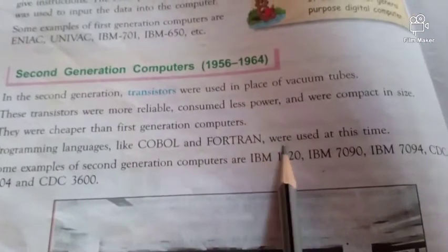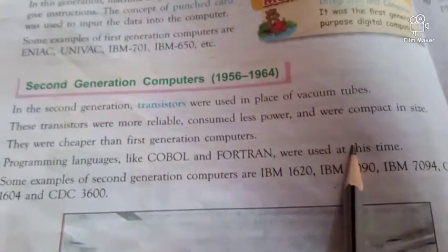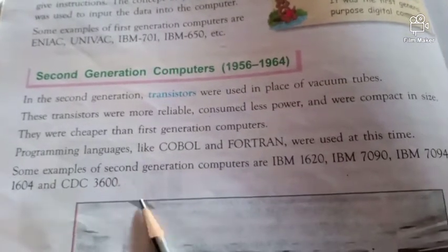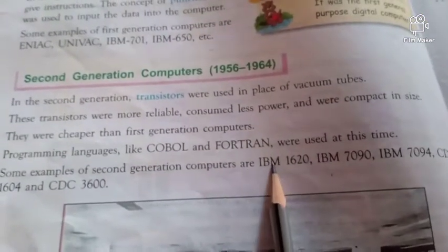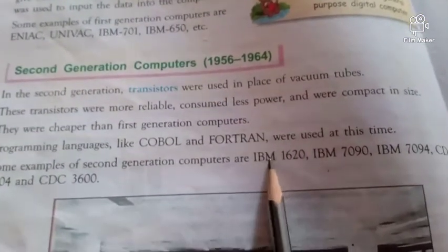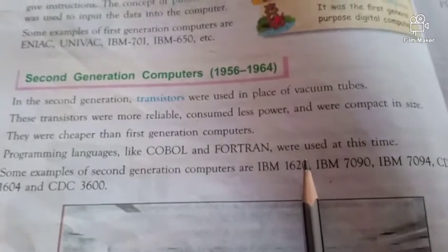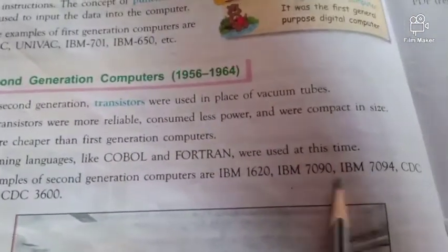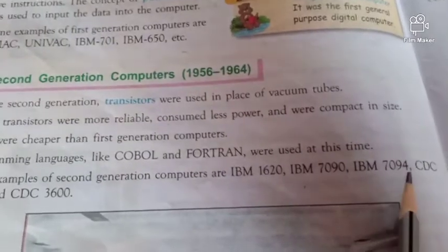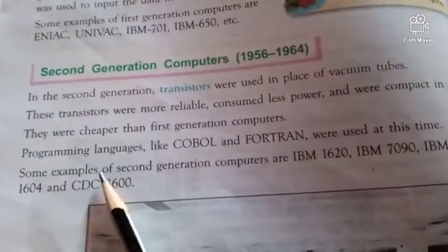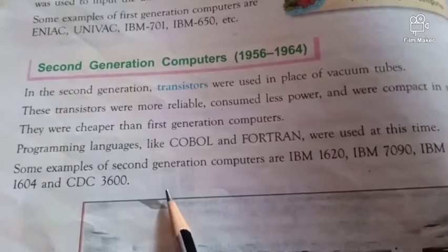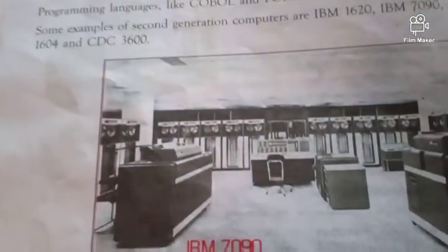Programming languages like COBOL and Fortran were used at this time. Some examples of second generation computers are IBM 1620, IBM 7090, IBM 7094, CDC 1604, and CDC 3600.